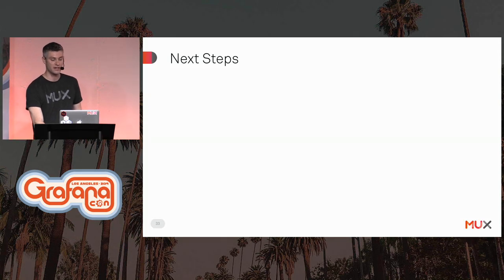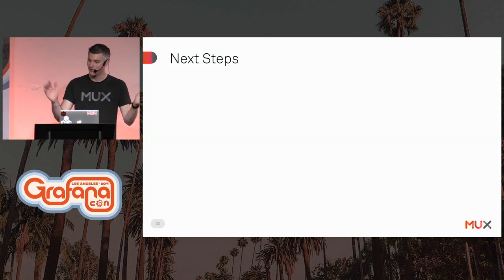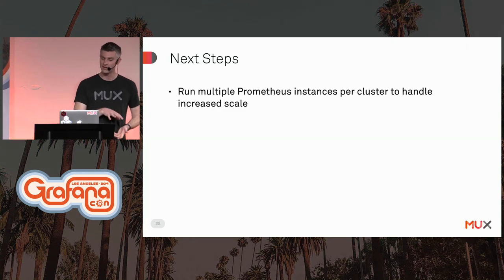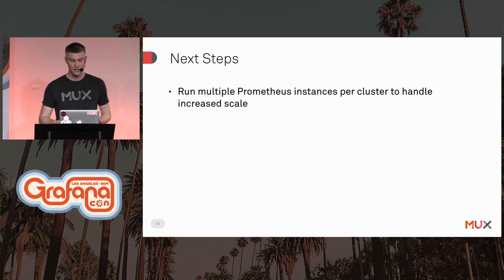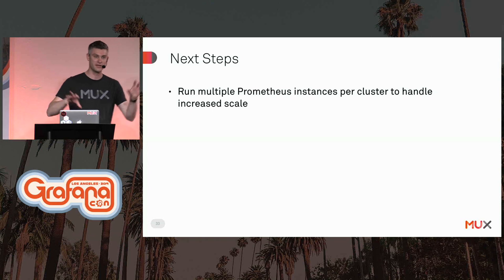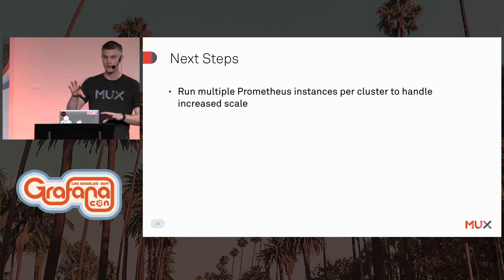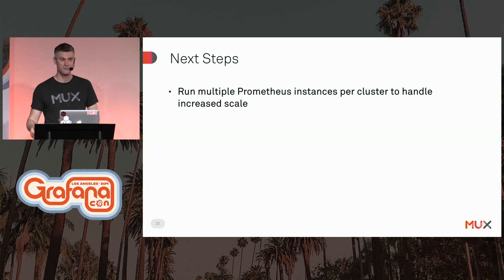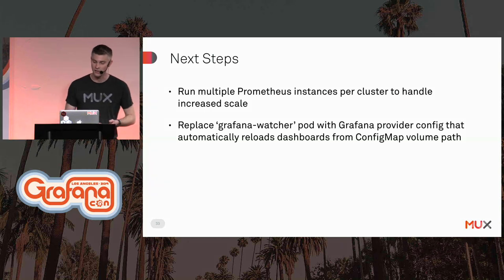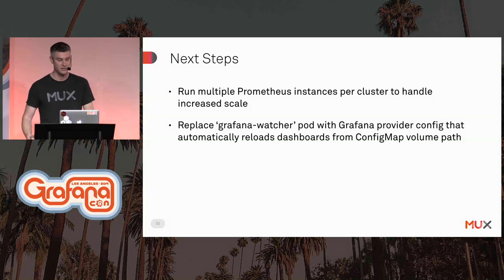What are some of the next steps we'd like to take to improve this process? First, we'd like to run multiple Prometheus instances per cluster to handle increased scale. The talk from Wen Ting Gong from Tinder about their Prometheus deployment was really inspiring — having separate Prometheus instances for each service within a Kubernetes cluster is probably the path we're going to take. We'd also like to switch to Grafana's provider config that automatically reloads dashboards from a location on the filesystem — in this case, the ConfigMap volume — when it detects changes, eliminating the need for the Grafana Watcher pod.